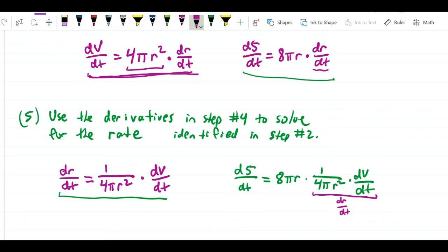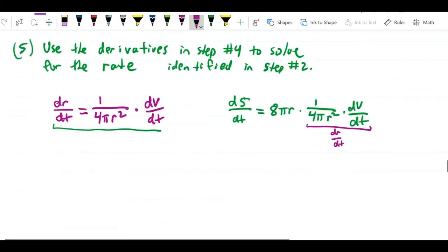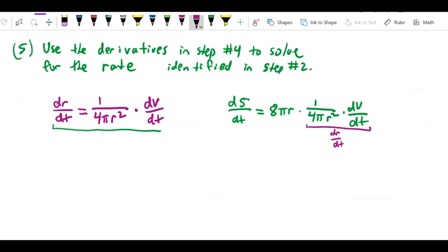I can simply simplify the expression, and that gives me, I'll come back down here, dS/dt is equal to 8 pi r over 4 pi r squared. Let's see, 8 pi over 4 pi is 2, and r over r squared just gives me one factor of r in the denominator, and then I still have this dV/dt in the equation.